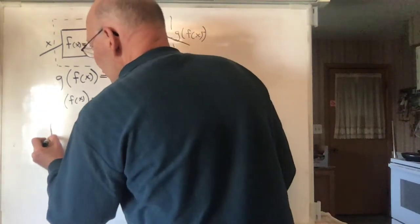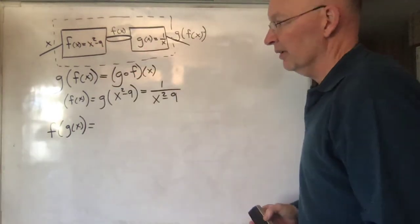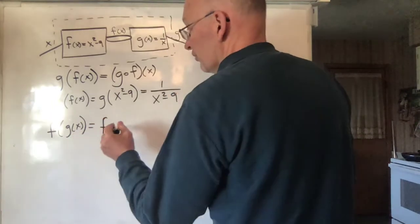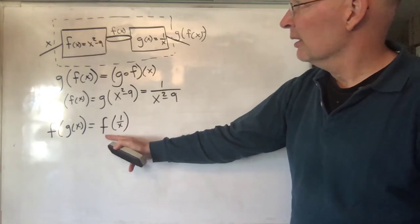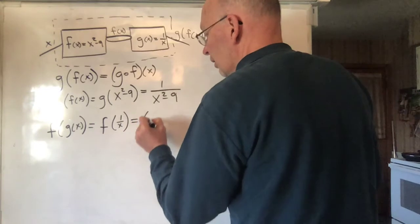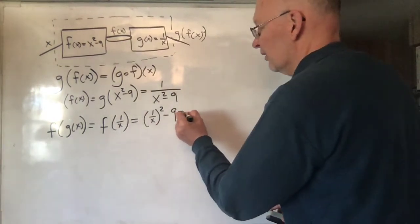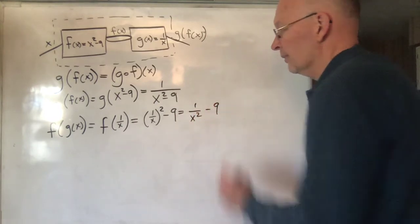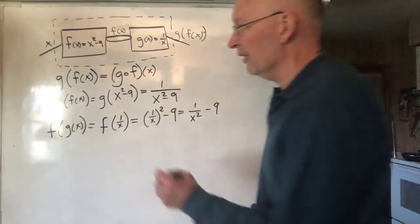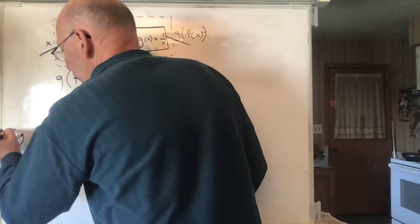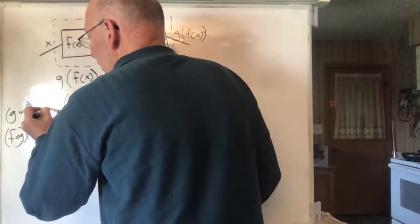What if we wanted F of G of X, given that G and F are the same as above? That would be F of — what's G of X? G of X is 1 over X. What does F do to anything? F takes that thing, squares it, and then subtracts 9 from it. So you get 1 over X squared minus 9. Notice that F of G of X and G of F of X are totally different. This one is F composed with G of X; this one is G composed with F of X.